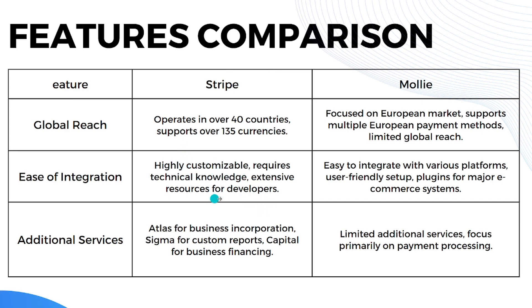When it comes to ease of integration, Stripe is highly customizable but requires technical knowledge and extensive developer resources, while Mollie is easy to integrate with various platforms, offering a user-friendly setup and plugins for major e-commerce systems. For additional services, Stripe offers Atlas for business incorporation, Sigma for custom reports, and Capital for business financing, while Mollie has limited additional services, focusing primarily on payment processing.